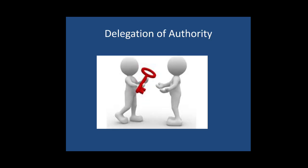Delegation of authority means the superior giving a part of his job to the subordinate. This shows that he trusts the subordinate, and the subordinate gets a chance to learn the job. Many times, those trustworthy subordinates are also promoted. However, a subordinate cannot delegate work to his superior.